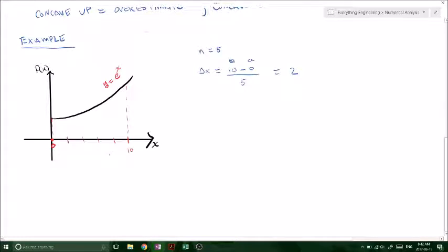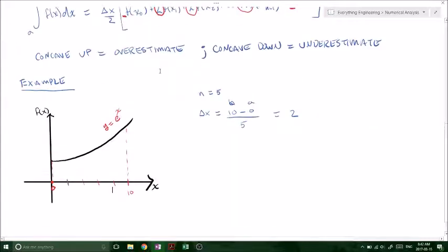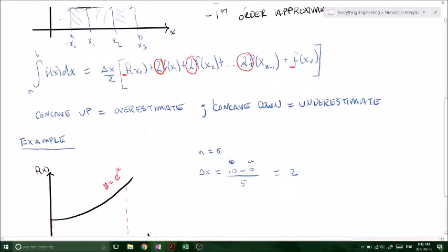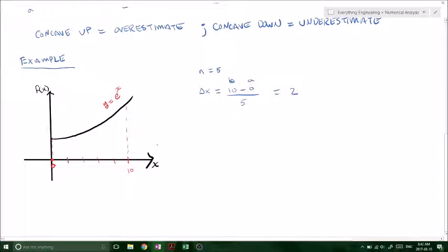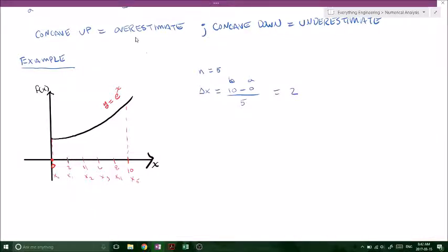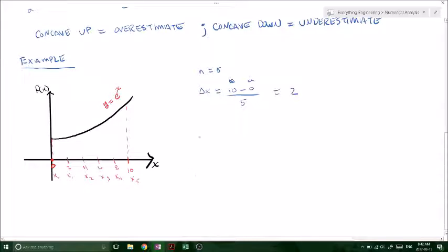And then one thing to remember with the trapezoidal method, that whatever your n equals, we're going to have n plus 1 terms inside of our f of x function. So for example, now that we have n equals 5, our function f of x equals delta x over 2 is going to have 6 terms, which I'll show you in a minute. So remember, our delta x is 2, so this is going to be 2, 4, 6, 8. So x naught is going to be 0, x1 is 2, x2 is 4, x3 is 6, x4 is 8, and x5 is 10. So now all we need to do is write up the formula and literally just calculate the numbers. And it's that simple.